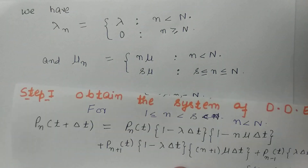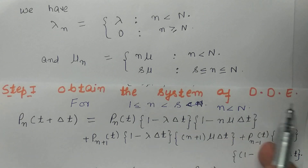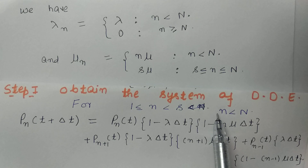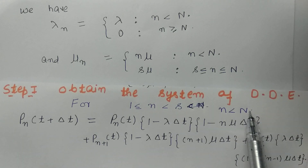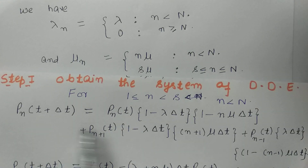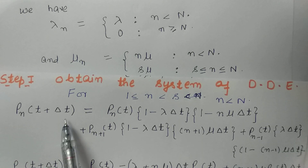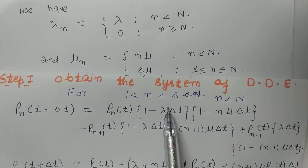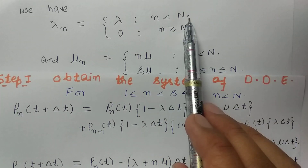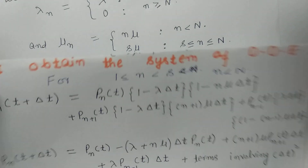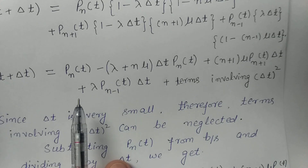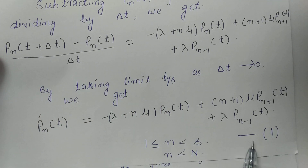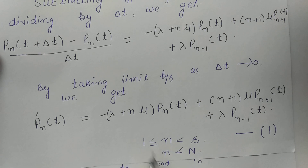Now, as in the previous model, in the first step we obtain the system of differential difference equations. For the case when N is less than S and less than capital N, the expression for P_N(t + Δt) equals P_N(t)·(1 − λΔt)·(1 − Nμ·Δt) plus other terms — this is the same as the previous model. This gives us Equation 1, valid for N strictly less than S, greater than 1, and N less than capital N.